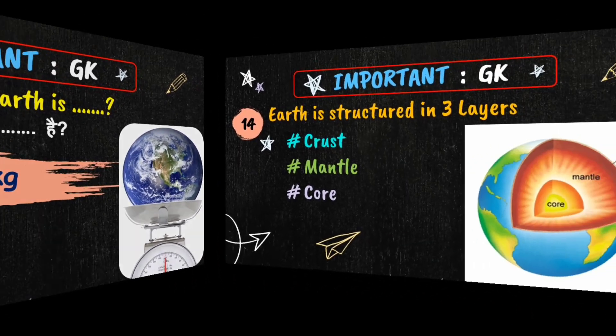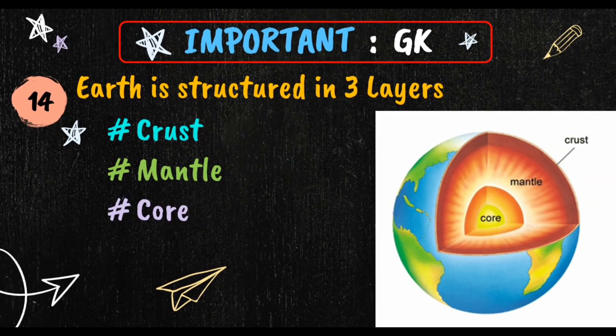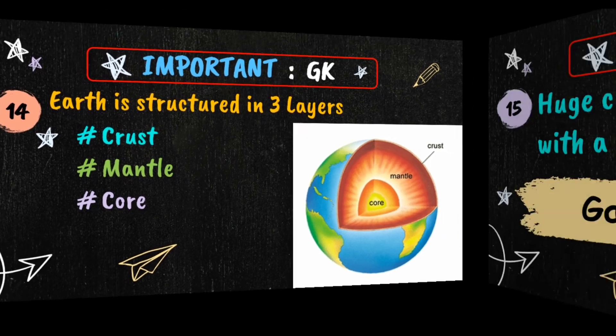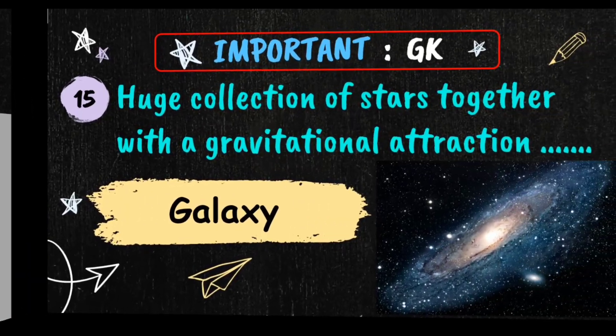The earth is basically structured in three layers: crust, mantle, and core. The core will be outer core and inner core. The core is having very high temperature.